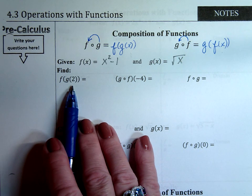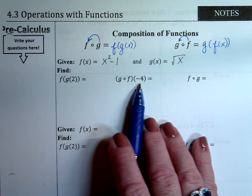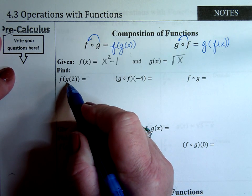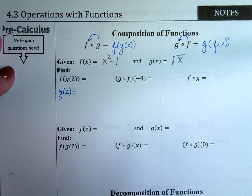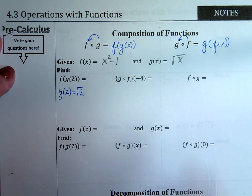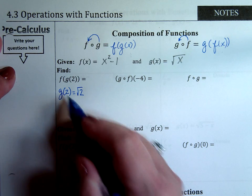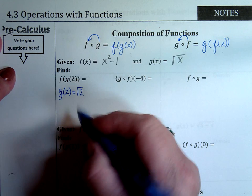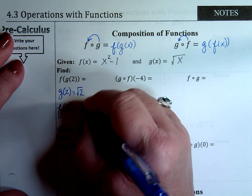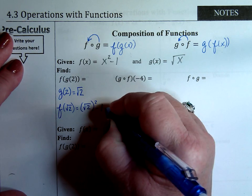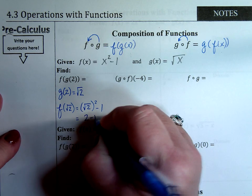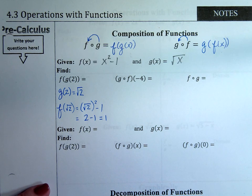We're going to find F of G of 2, goff of negative 4, and fog. You always start with the inside parentheses first, so find G of 2 first. You plug 2 into the G function and get the square root of 2. Then you take that answer and plug it into the F function — working from the inside out. F of the square root of 2 gives you the square root of 2 squared minus 1. Squaring a square root gets rid of the root, so you get 2 minus 1, which equals 1.